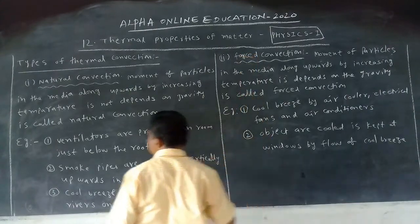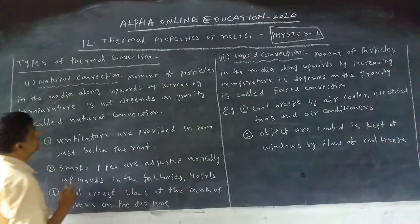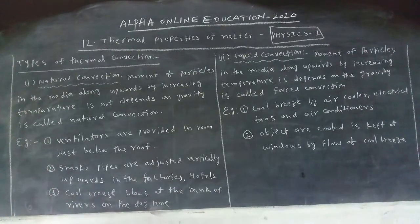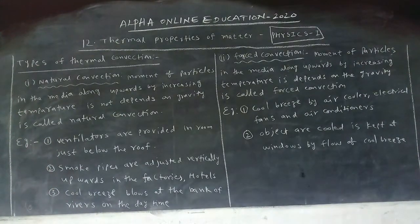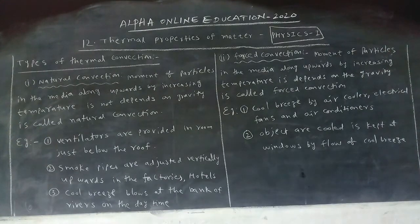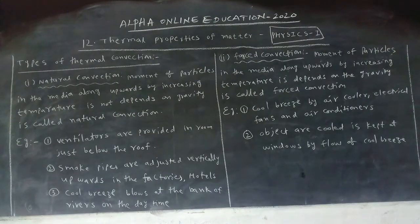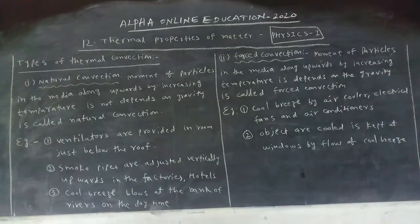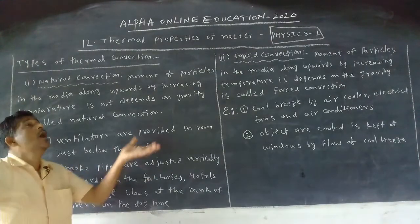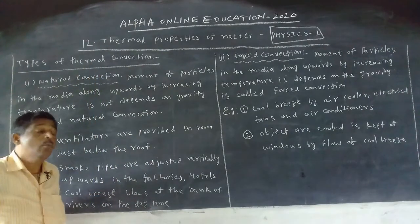What is natural convection? Movement of particles in the medium is along upwards. How do the particles move? Upwards.